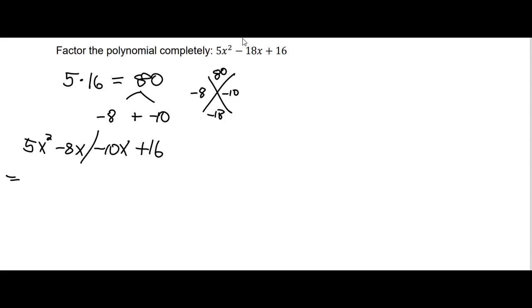We can then factor by grouping, factoring out an x, leaving us 5x minus 8, and factoring out a negative 2, leaving us 5x minus 8.